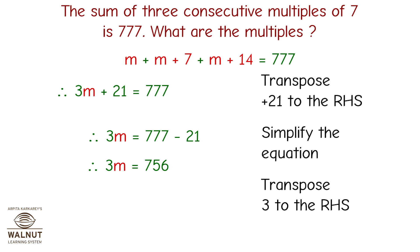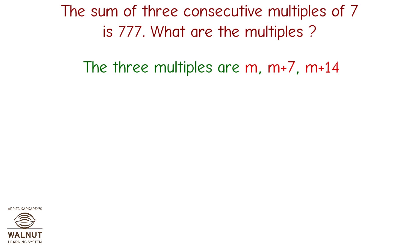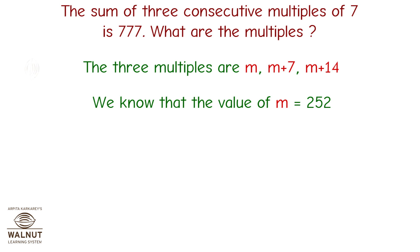Transpose 3 of 3m to the RHS. Therefore m equals 756 divided by 3, which equals 252. The three multiples are m, m plus 7, and m plus 14, and we know m equals 252.